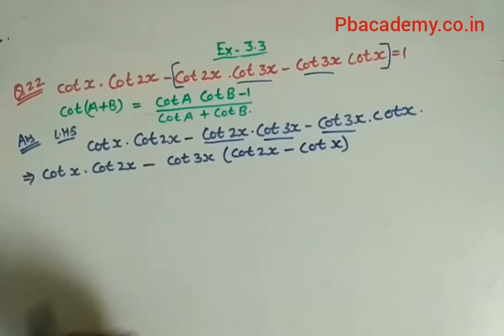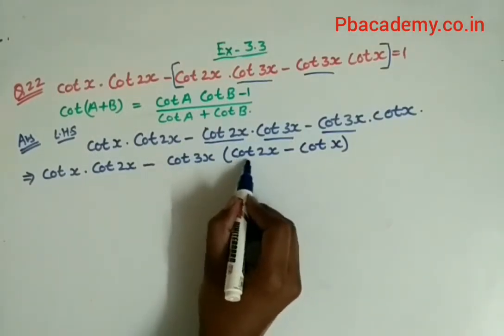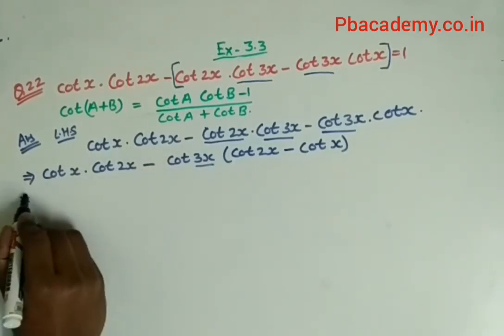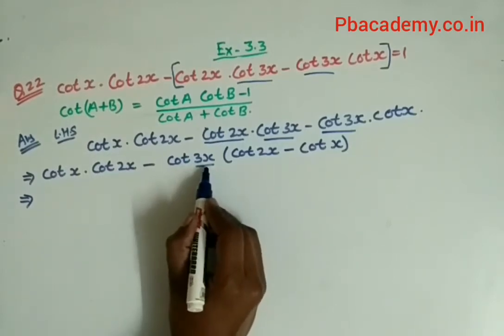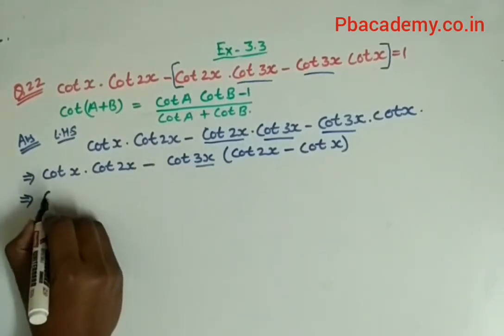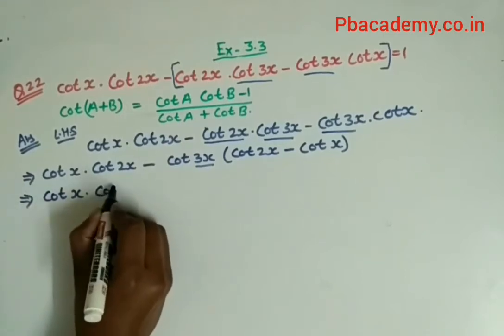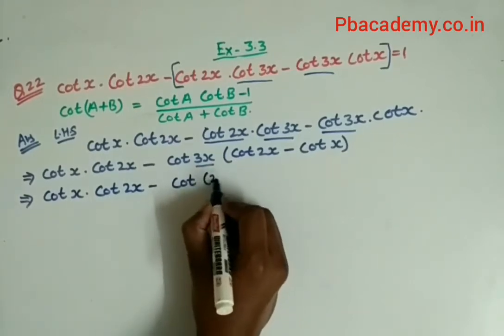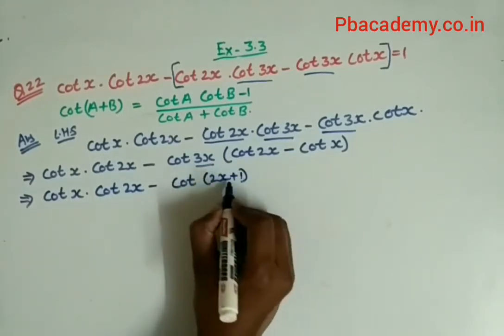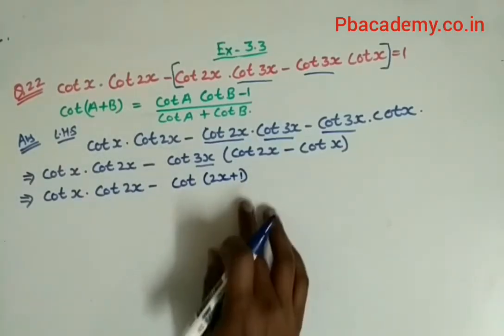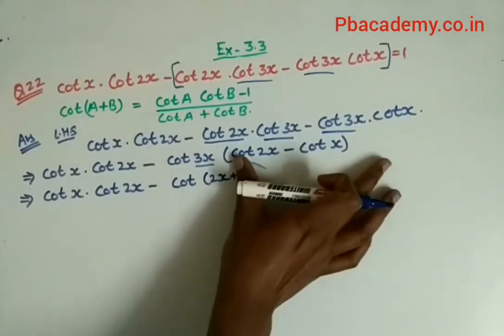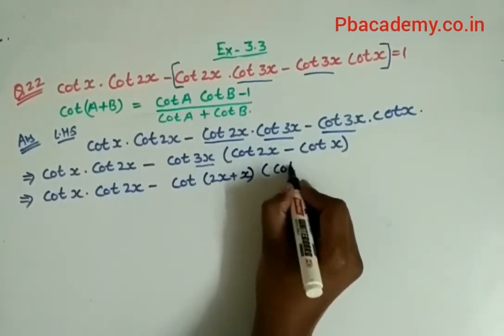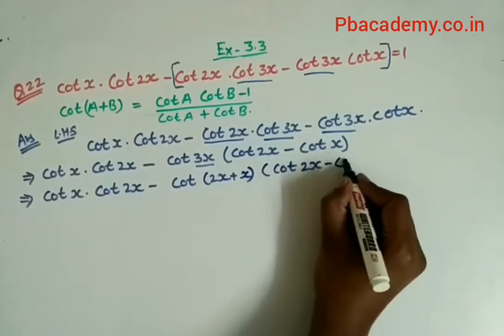By any means we have to convert cot 2x - cot x into a usable form. We will split 3x as 2x + x. So cot x · cot 2x as it is, minus here I will split it as cot(2x + x), which equals cot 2x - cot x.